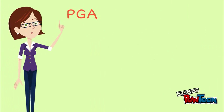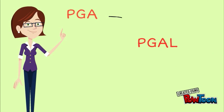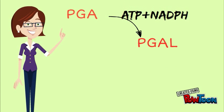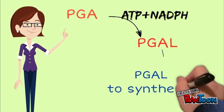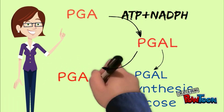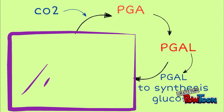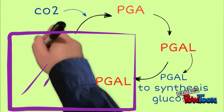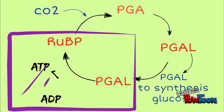In reduction, PGA is reduced into PGAL using ATP and NADPH. Some amount of PGAL is used to synthesize glucose. The rest is used to reproduce RUBP. In the final stage, PGAL is regenerated into RUBP using the energy of ATP. This completes the Calvin-Benson-Bassam cycle.